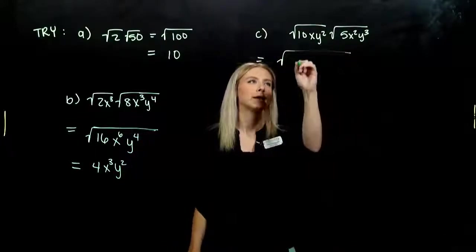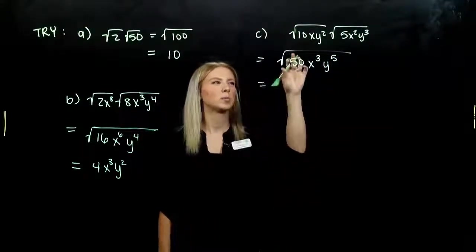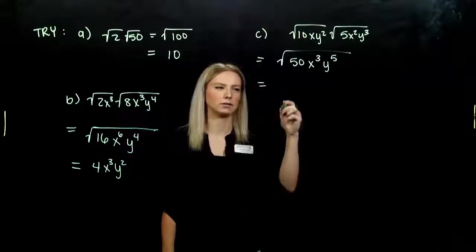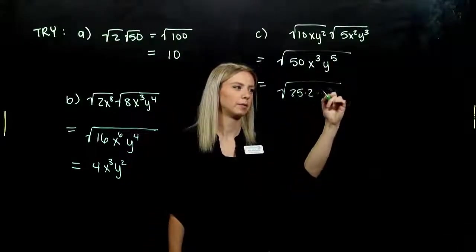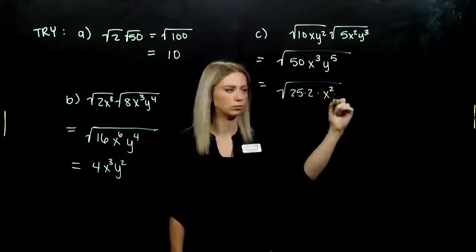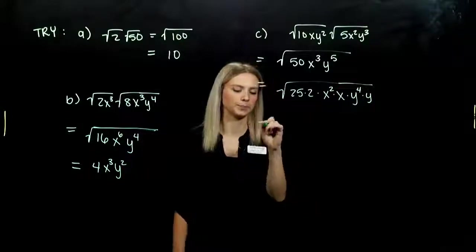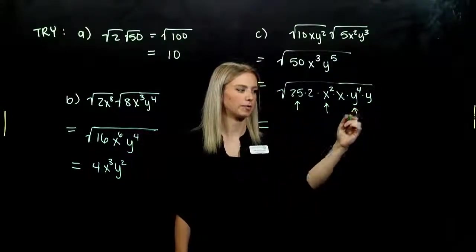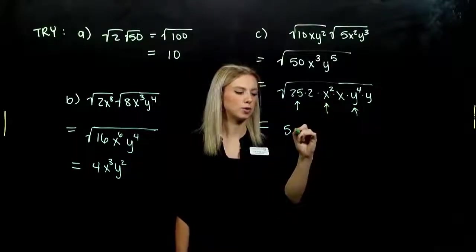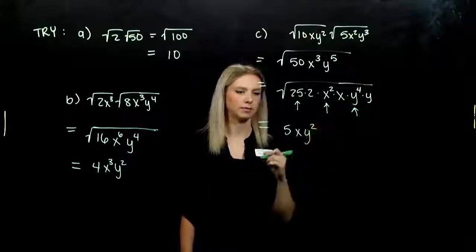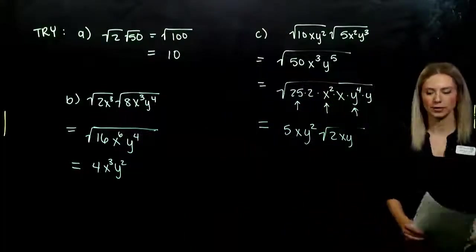And last: √(5x) · √(10xy⁵). Multiplying everything together: 50, x to the third, y to the fifth. Break 50 into the largest perfect square and something else: 25 and 2. We have odd powers on both variables, so we need to split them. The largest even from 3 is 2, with one left over; y⁵ breaks into y⁴ and one left over. Evaluating: √25 = 5, x² gives 1 factor of x out, y⁴ gives y². Leftovers on the inside: √(2xy). None of those factors are perfect squares, so we're done.